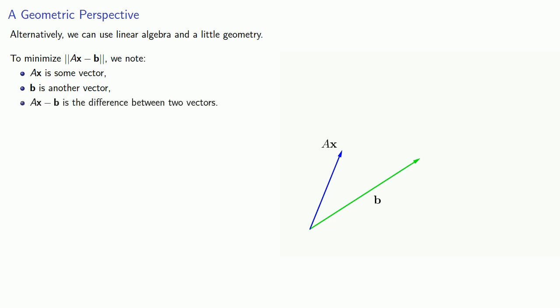So to minimize this norm of Ax minus b, we might note the following. Ax is some vector, b is another vector, and Ax - b is the difference between two vectors. And if we look at this geometrically, this vector Ax - b is the vector that joins b to Ax. And we want to make the length of this vector as short as possible. So as we change x, this vector Ax and Ax - b will change.